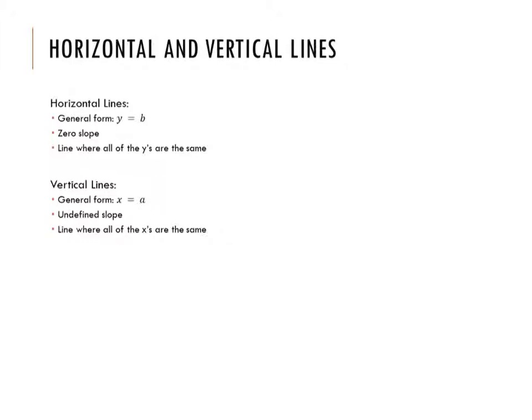Vertical line is kind of the complete opposite here. General equation is x equals, so it's x equals a number. There's no variable on this side. Since they're vertical, they have an undefined slope. And I think about this as the line where all the x's are the same. So every single x is this number. So let's look at two examples.